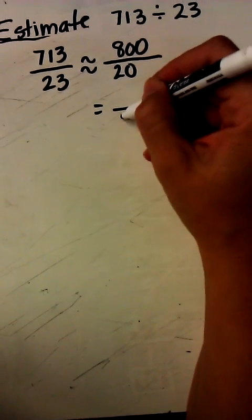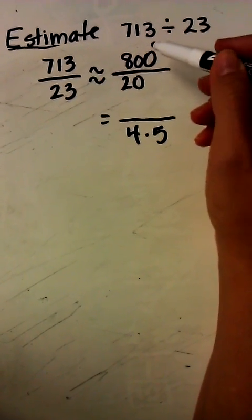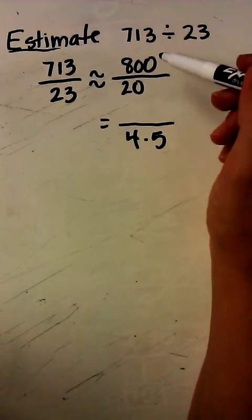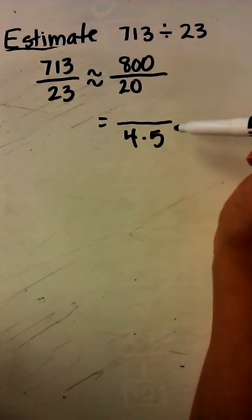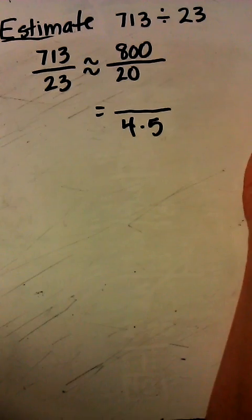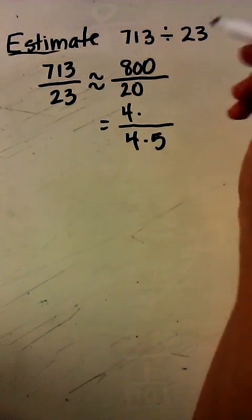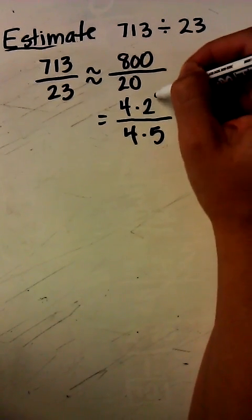20 is the same thing as 4 times 5. And I want to decompose my numerator now so that I can hopefully get a factor of 4 or 5.